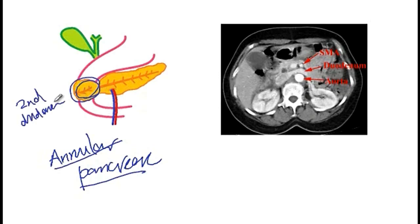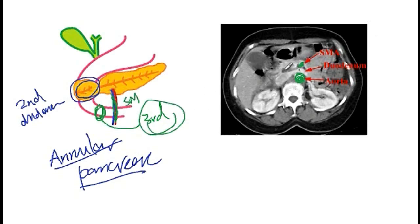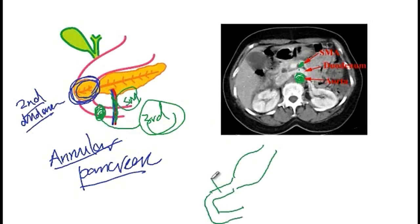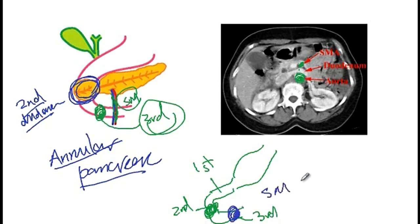Now that I've spoken about blockage of the second part of the duodenum, I'd also like to discuss blockage of the third part, which can be caused by a narrow angle between the superior mesenteric vessels and the aorta. As you can see on this CT image, we have the aorta here and the superior mesenteric artery here. If the angle between these two vessels is too narrow, they would impinge on the third part of the duodenum and cause blockage. So keep in mind: annular pancreas blocks the second part of the duodenum, while a narrow angle between the superior mesenteric vessels and the aorta blocks the third part.